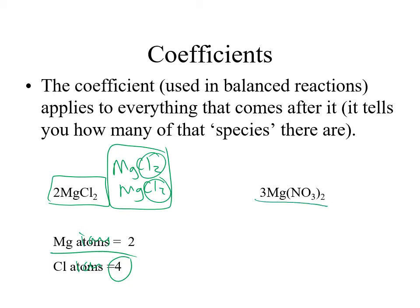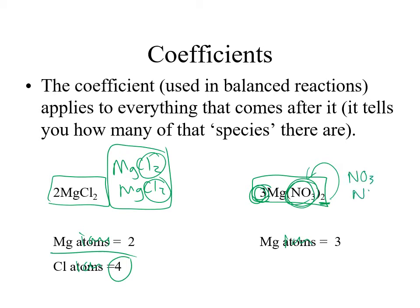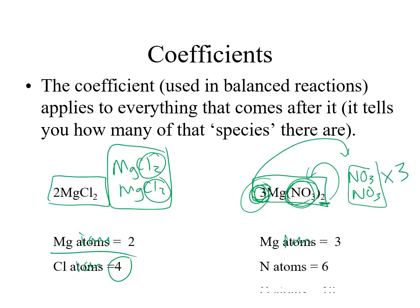For 3Mg(NO3)2, the coefficient of 3 tells us we have three magnesium ions. We now have three groups of two nitrate ions — so three groups of two nitrates gives us six nitrogens. We had six oxygens per group already, and we multiply by three, giving us 18 oxygens total in this magnesium nitrate formula.